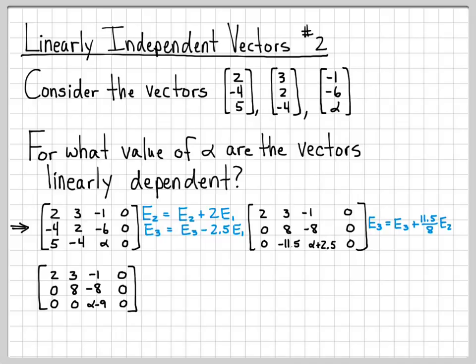And then this actually works out nicely. As I add negative eight times 11.5 over 8, the eights cancel, and I get a negative 11.5, which when added to 2.5, gives me the value of negative 9. So that's why that is alpha minus 9 there in that third row.